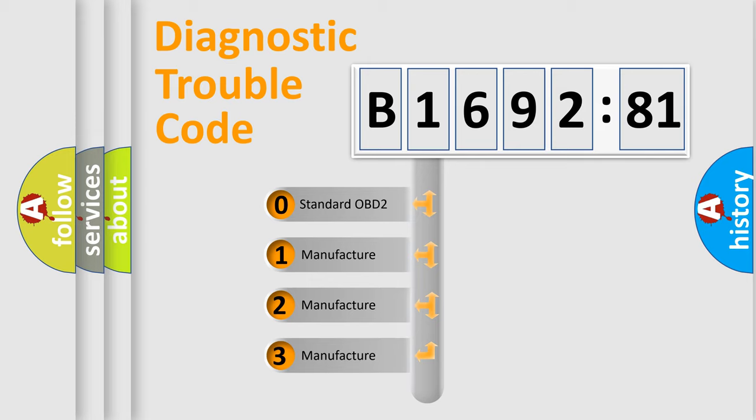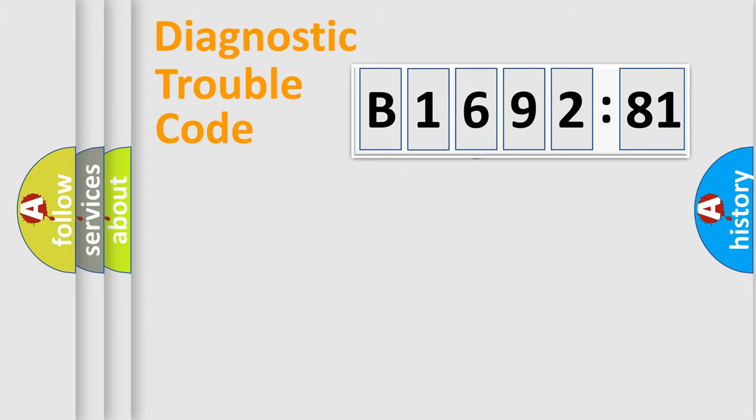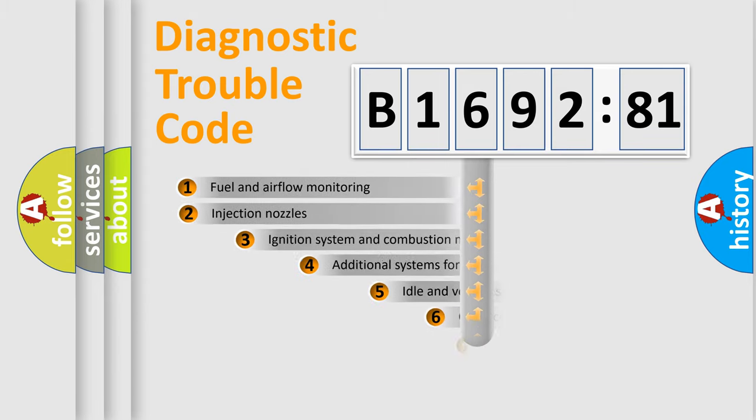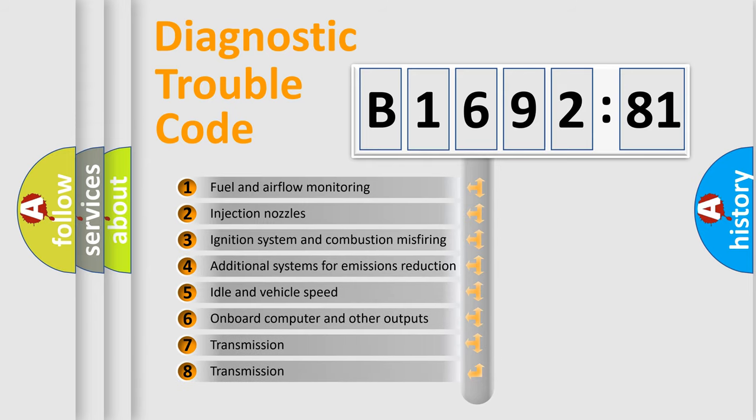This distribution is defined in the first character code. If the second character is expressed as zero, it is a standardized error. In the case of numbers 1, 2, or 3, it is a more specific expression of the car-specific error.